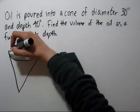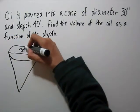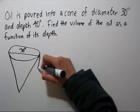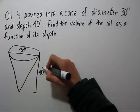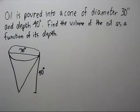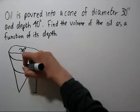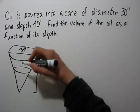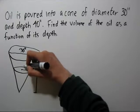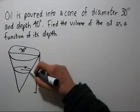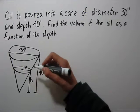So the diameter is 30 inches. That's this distance across. And the depth is 40 inches. And it's going to be partway filled up with oil. So let's call this our radius and this we'll call our height, or actually depth.